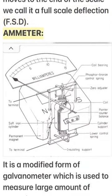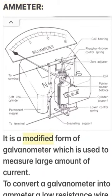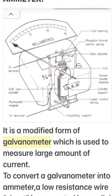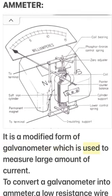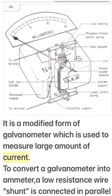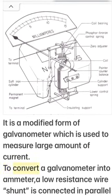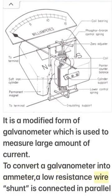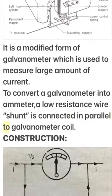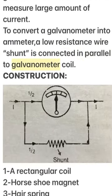3. Ammeter: It is a modified form of galvanometer which is used to measure a large amount of current. To convert a galvanometer into an ammeter, a low-resistance wire called a shunt is connected in parallel to the galvanometer coil.